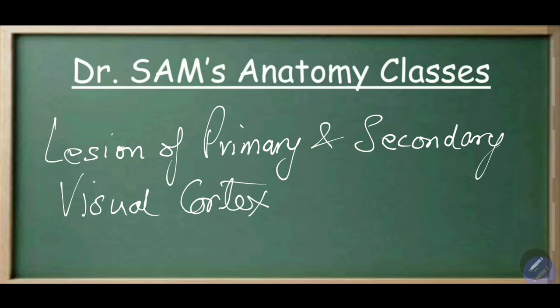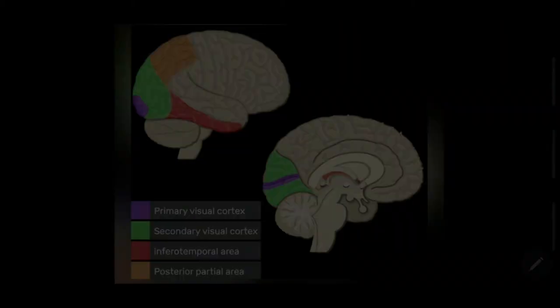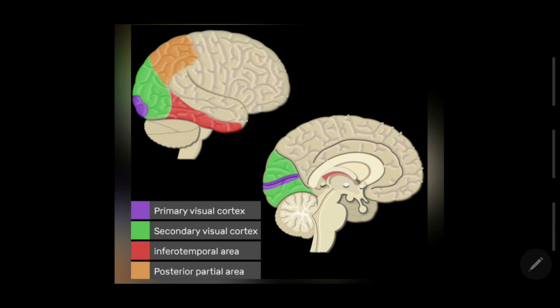Lesion of primary and secondary visual cortex, Broadman's area number 17, 18, and 19. Now this you are seeing are the two surfaces. This one is the superlateral surface and this one is the medial surface of the cerebral hemisphere. So this purple color area you are seeing on both the surfaces, this is primary visual area and this is area number 17.